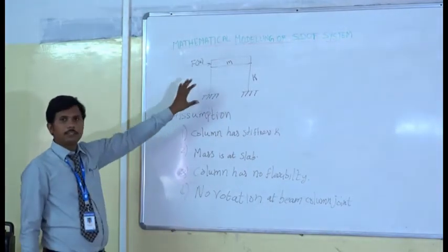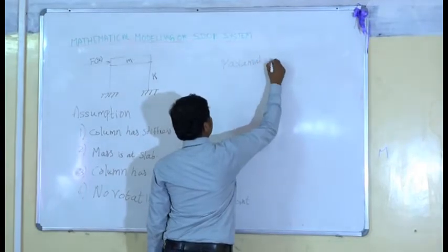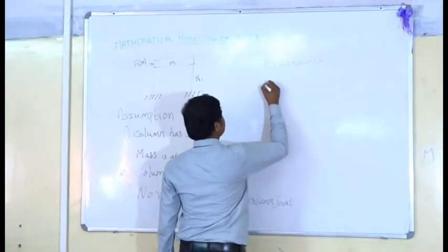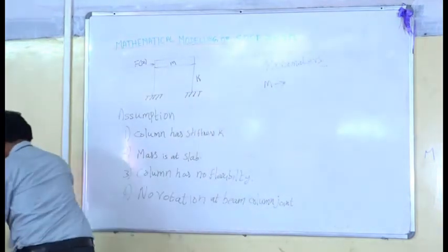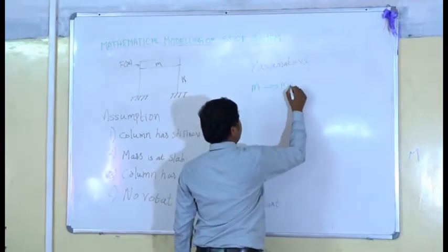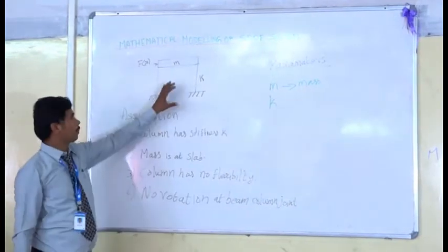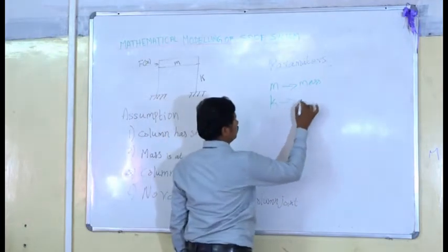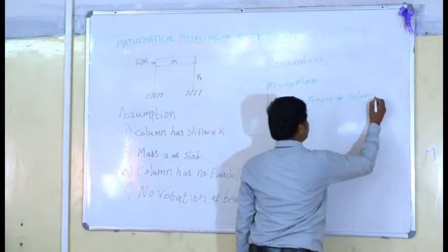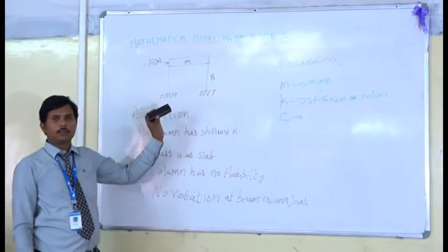For the derivation, we assume some parameters. The parameters involved in this derivation are: M is the mass of the system. K is the stiffness of column. And C is the damping coefficient.